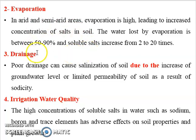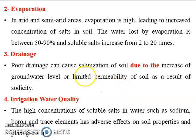The third factor is drainage. Poor drainage can cause salinization of soil due to the increase of groundwater level. Saline groundwater usually has high salt content. Poor drainage causes salinization as the groundwater approaches the surface, and capillary action carries the water upward, especially in clay soils. The water reaches the surface, evaporates, and the salt accumulates on the top of the soil profile.